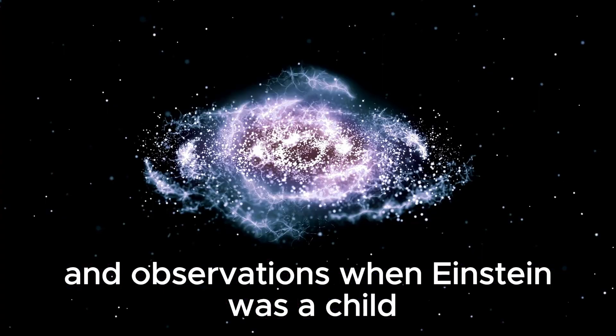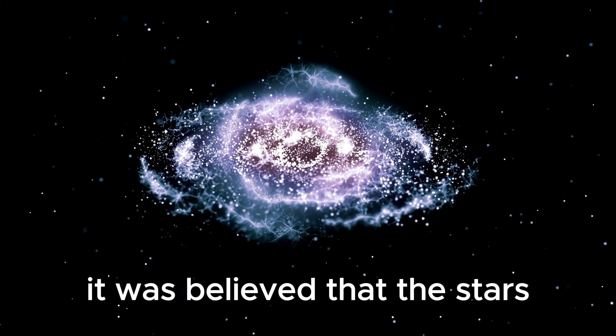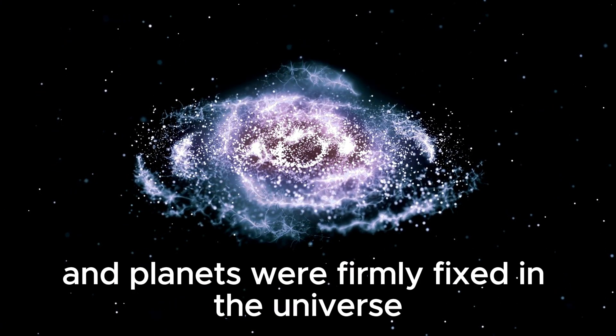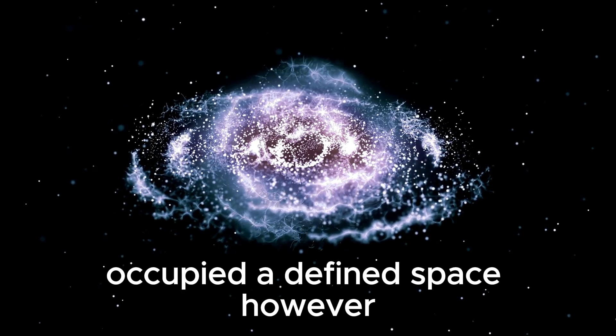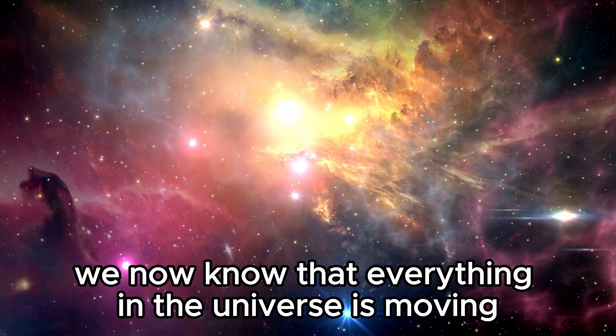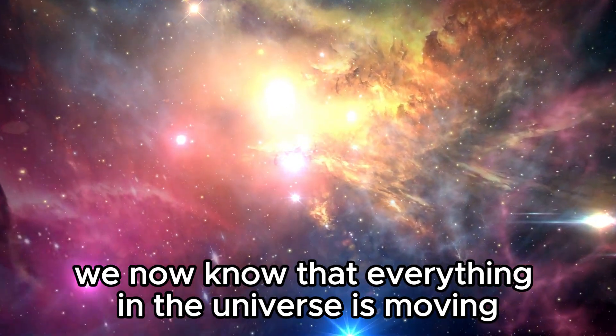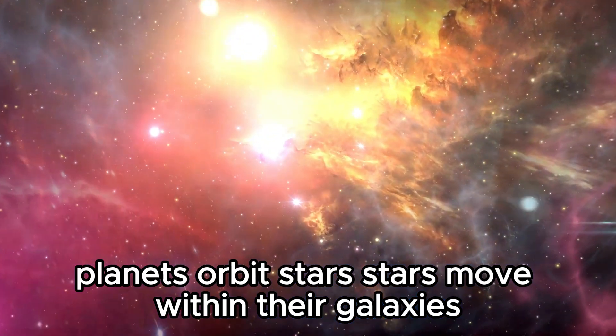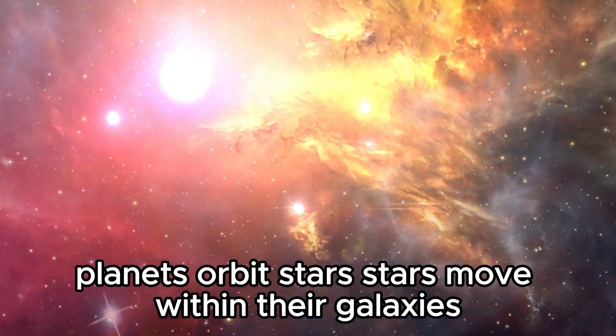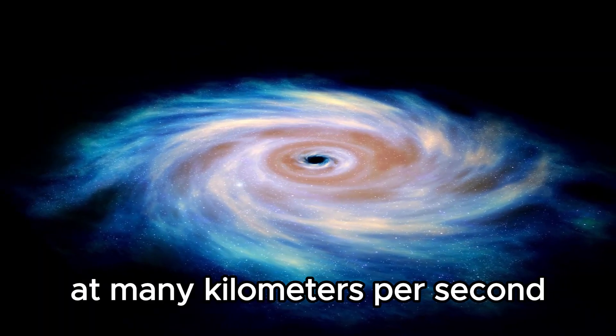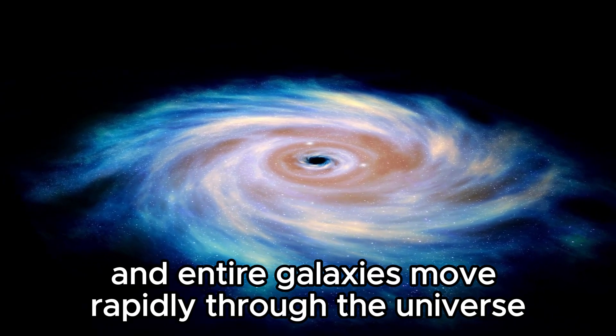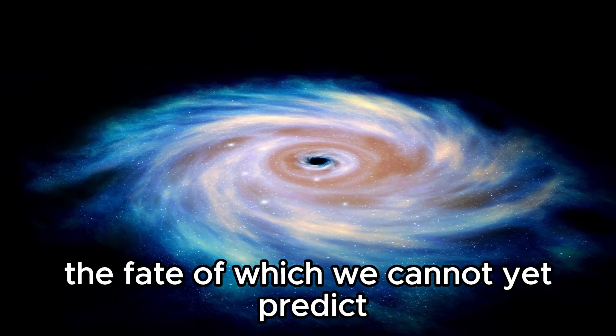When Einstein was a child, it was believed that the stars and planets were firmly fixed in the universe. However, we now know that everything is moving—planets orbit stars, stars move within their galaxies at many kilometers per second, and entire galaxies move rapidly through the universe.